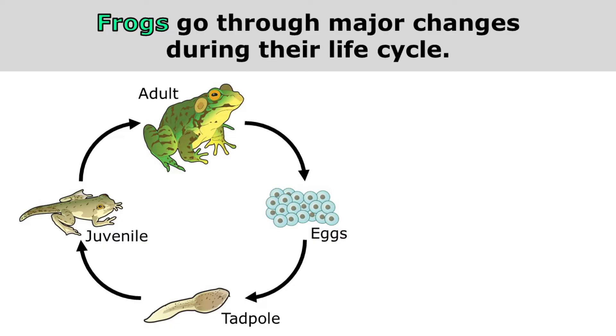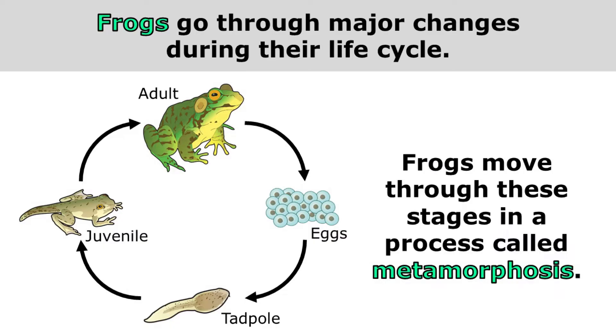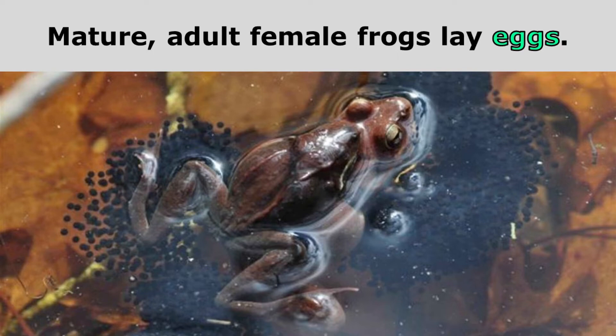Frogs go through major changes during their life cycle. Frogs move through these stages in a process called metamorphosis. Mature adult female frogs lay eggs, and here you can see an adult frog that's surrounded by eggs.